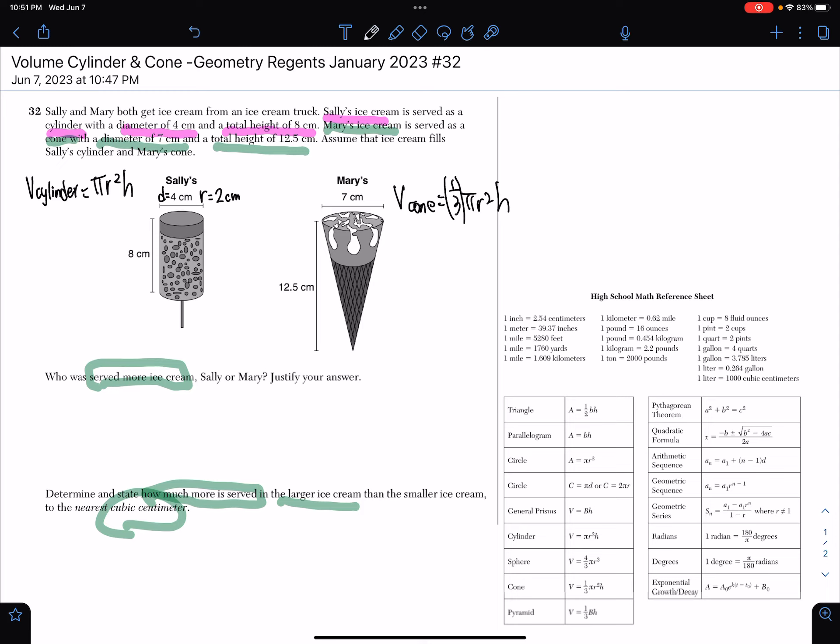Let's do that for Mary's. Mary's diameter was 7 centimeters and therefore the radius is 7 divided by 2, which is 3.5 centimeters. The height of Sally's cylinder is 8 centimeters and the height of Mary's cone is 12.5 centimeters.